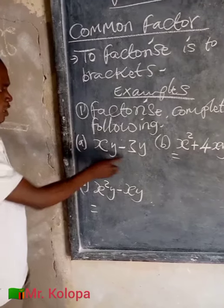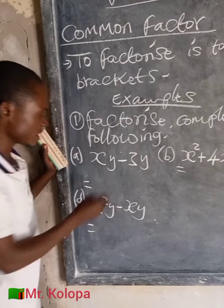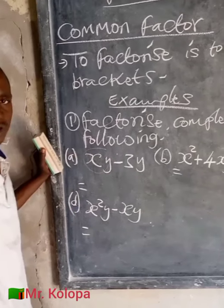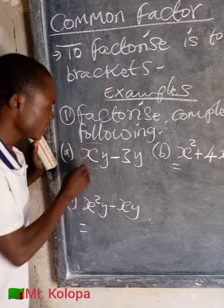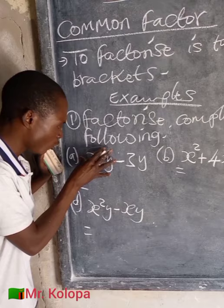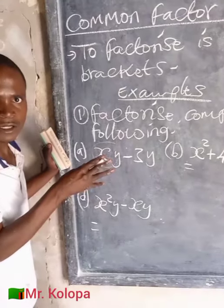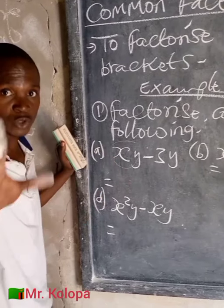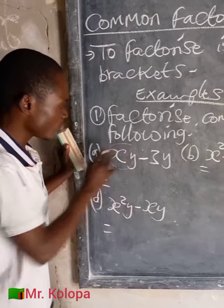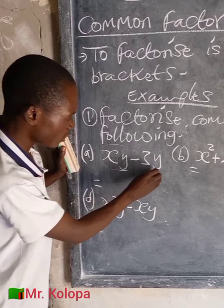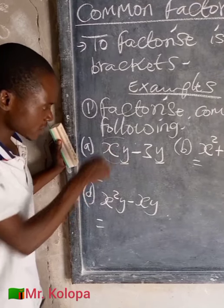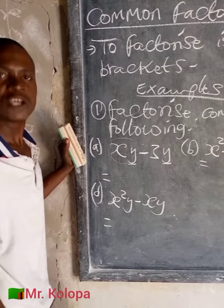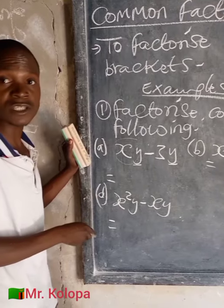Let's look at this example. We want to factorize. How many terms do we have? We have this term and this term. We need to find what we call the common factor. Do we have a number which is common? No. We don't have a common number — in this case we have a 1, and we don't consider 1 as a common factor. So we only have a letter. If you look here, we have a y, and we also have y. So y in this case is common, and that y which is common is what we are calling the common factor. That common factor is supposed to be factored outside the brackets.